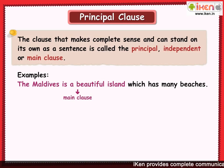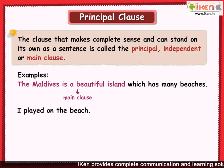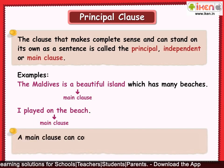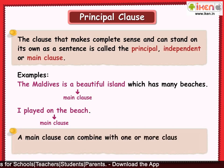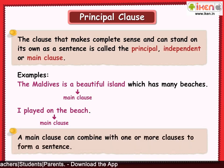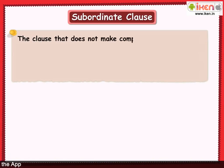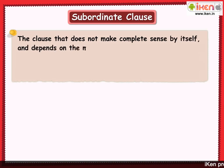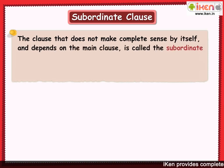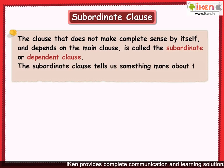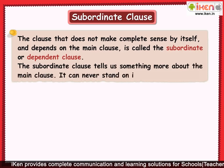Let us look at another example: 'I played on the beach.' This sentence consists of a main clause only, since it has only one subject and predicate. A main clause can combine with one or more clauses to form a sentence. The clause that does not make complete sense by itself and depends on the main clause is called the subordinate or dependent clause. The subordinate clause tells us something more about the main clause. It can never stand on its own.